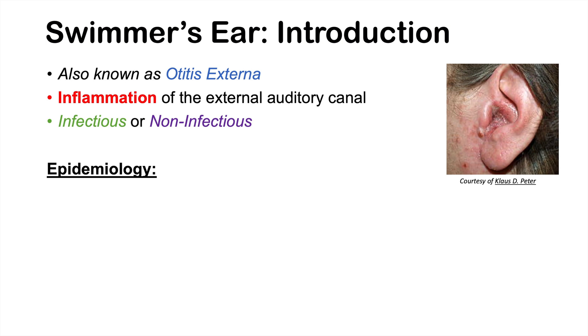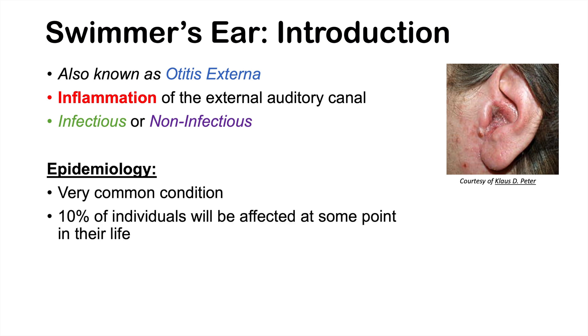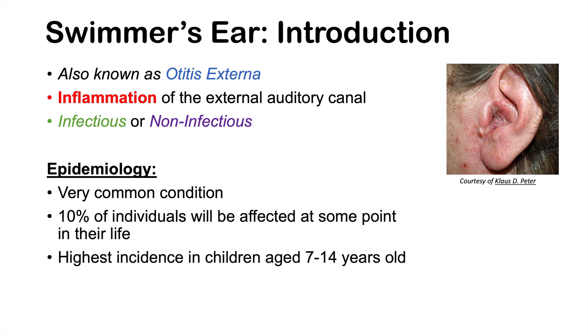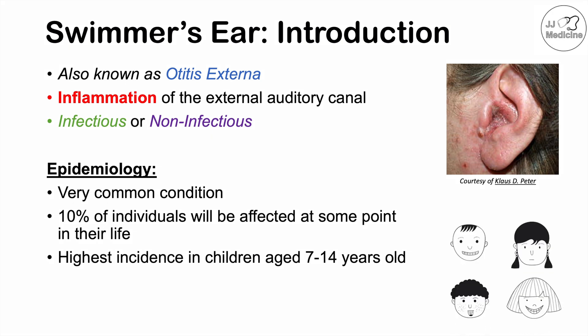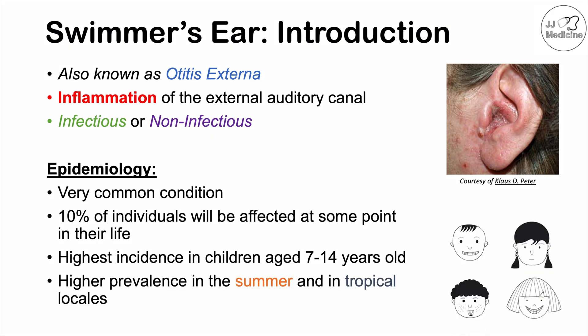What is the epidemiology of swimmer's ear? It is a very common condition, estimated to affect approximately 10% of individuals at some point in their life. It has the highest incidence in children aged 7 to 14 years old, and a higher prevalence in the summer and in tropical locales.